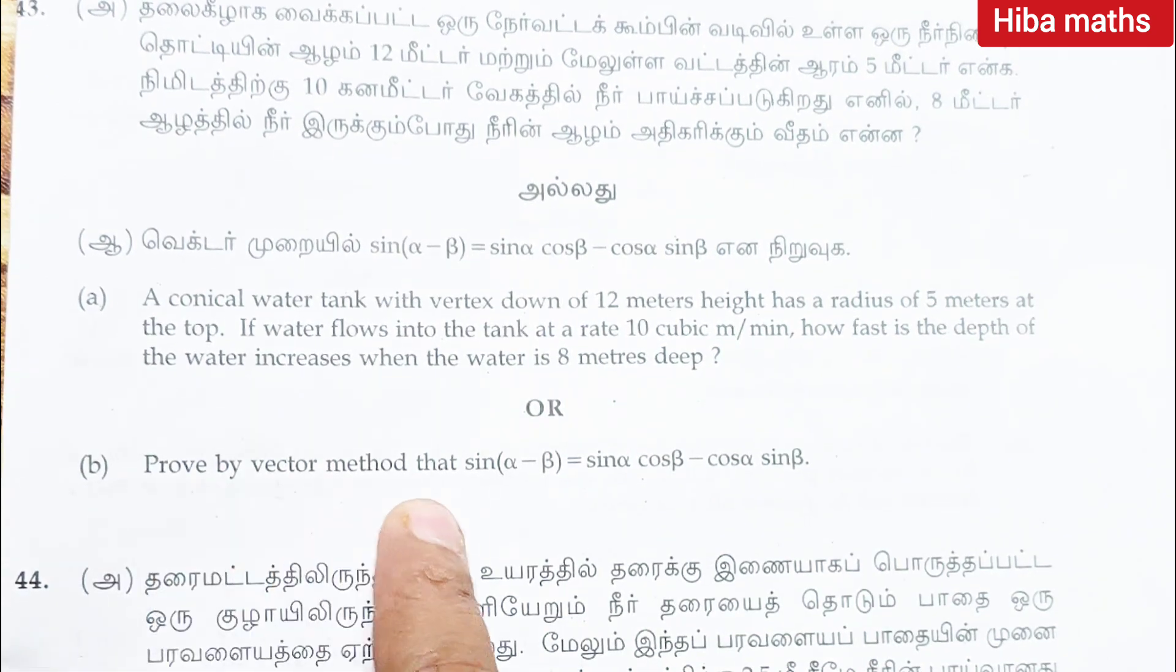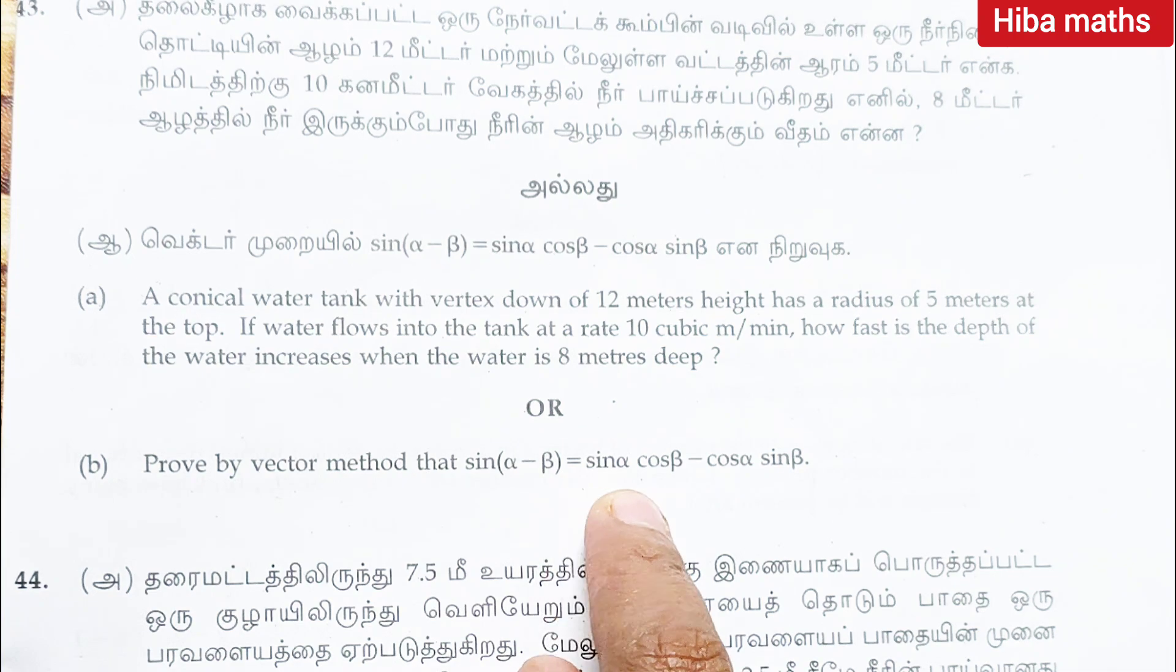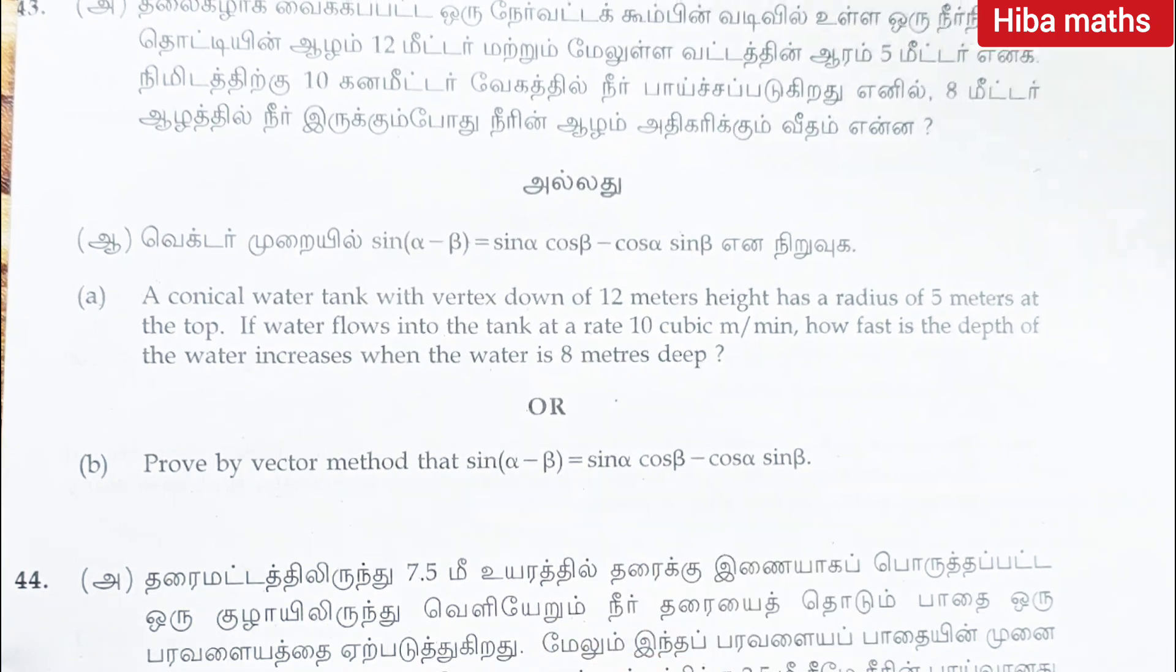Question 44: prove by vector method that sin alpha minus beta is equal to sin alpha cos beta minus cos alpha sin beta.